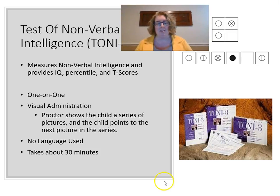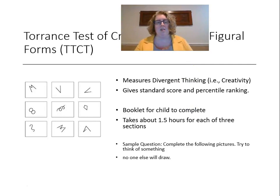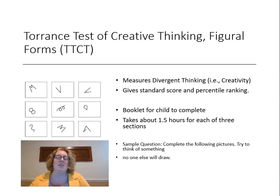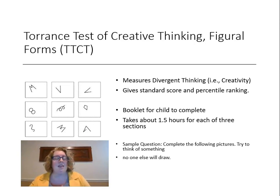The next test is the Torrance Test of Creative Thinking — Figural Forms. This is a standardized measure of creativity, which might seem like an oxymoron, but it gives us a way to objectively measure creativity through divergent thinking. It produces a standard score and a percentile ranking, making it a norm-referenced measure. It's group administered via a booklet for each child, takes about an hour and a half, and can be given from about second grade through adulthood.